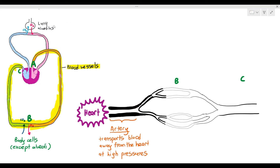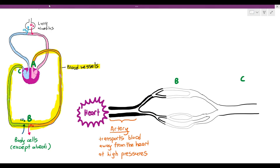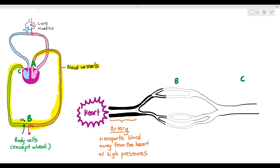Some students say arteries transport oxygenated blood and veins transport deoxygenated blood — that is a wrong way of looking at it. The main function of arteries is just to transport blood away from the heart at extremely high pressures. We are going to look at the structure of the artery in the next video. For now, the artery will diverge or divide to become smaller blood vessels, and those smaller blood vessels are referred to as arterioles. Arterioles are just like arteries, but smaller.